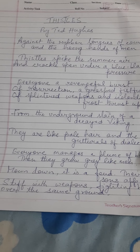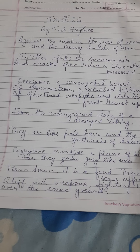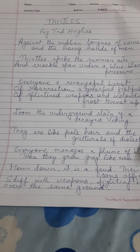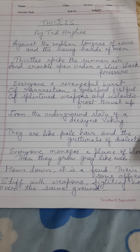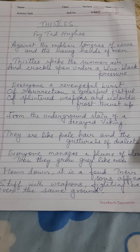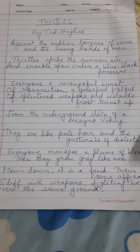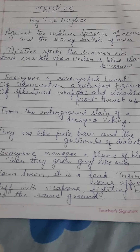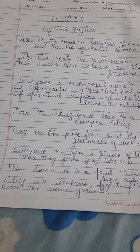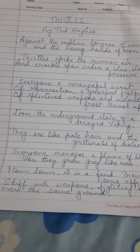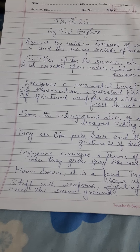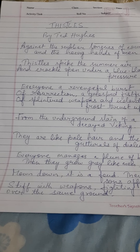The poem begins: 'Against the rubber tongues of cows and the hoeing hands of men, thistles spike the summer air and crackle open under blue-black pressure.' The first line is a long, rambling 15-syllable line, mostly iambic, giving it an initial steady beat that eventually breaks up. The poem begins with the preposition 'against,' meaning opposition.